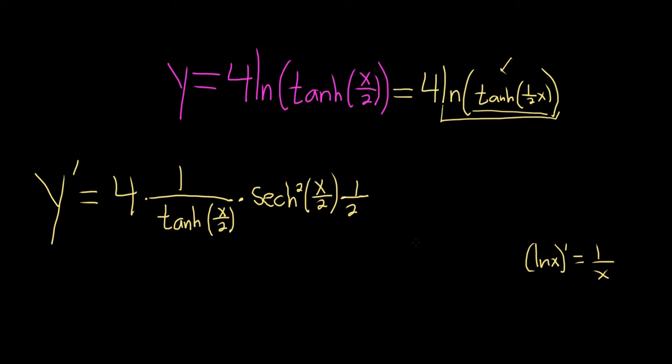So it's 4 times the derivative of ln, which is 1 over this, times the derivative of the inside function, which is this, times the derivative of the inside function, which is this. It's like a double chain rule.